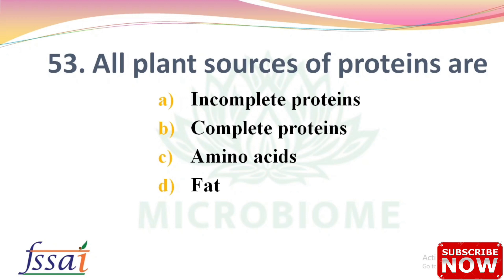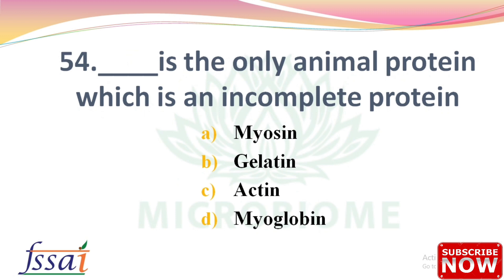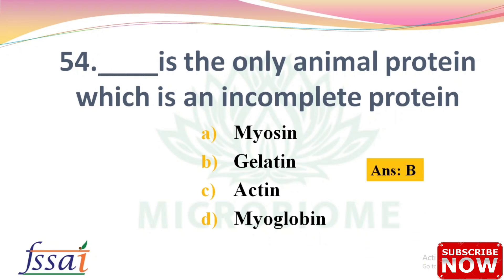Next question: All plant sources of proteins are — options: incomplete proteins, complete proteins, amino acids, fat. The right answer is option A, incomplete proteins. Next: Dash is the only animal protein which is an incomplete protein — options: myosin, gelatin, actin, myoglobin. The right answer is option B, gelatin.